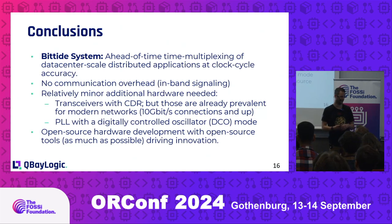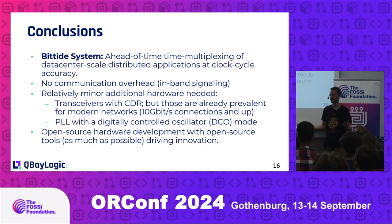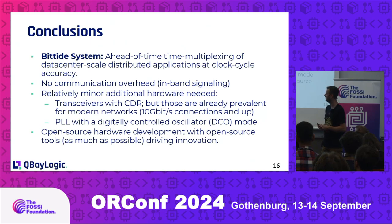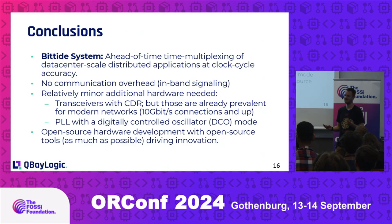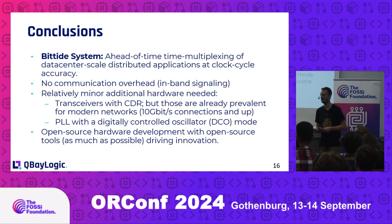The transceivers already have CDR, which is prevalent for modern networks at 10 gigabits and up. We just need a PLL with a digitally controlled oscillator so we can do the frequency steps up and down. Again, if we look at FPGAs, these are very prevalent as well.